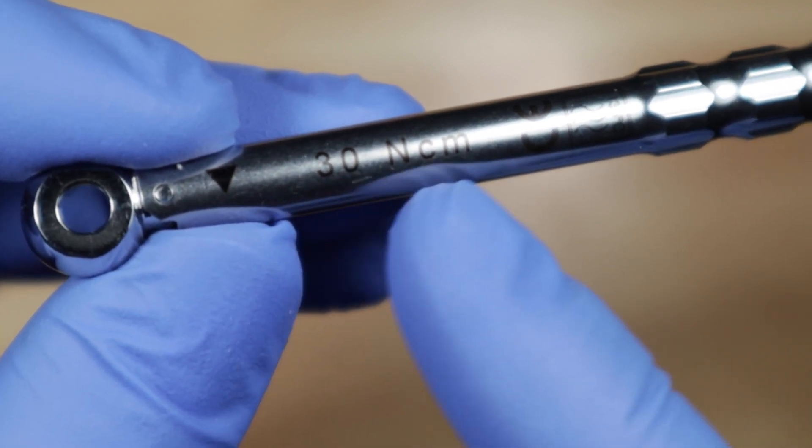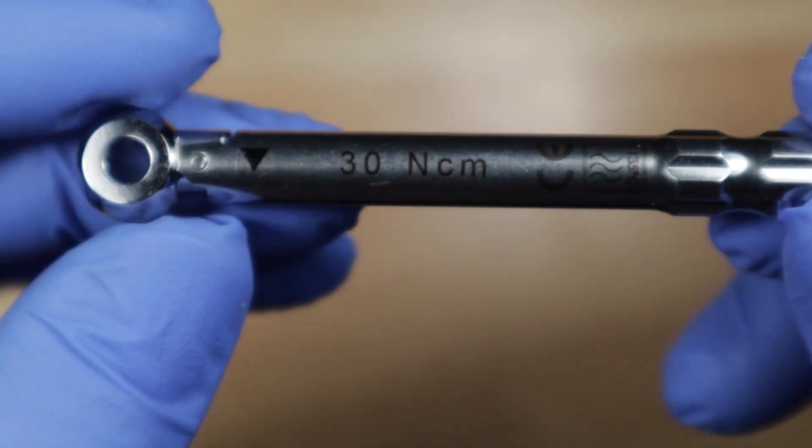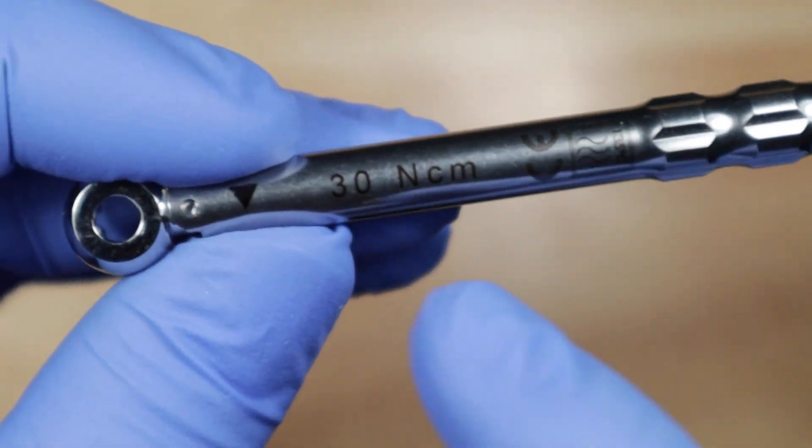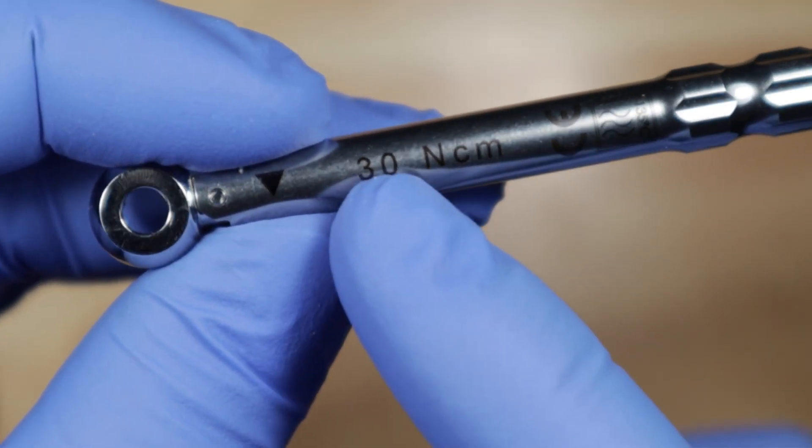It's already calibrated at 30 newton centimeters so you don't have to mess with the torque or anything like that. It will automatically take the screw to 30 newton centimeters only.